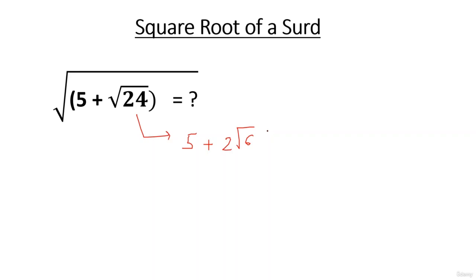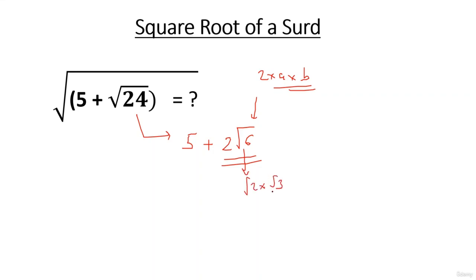Now I'll try to visualize 5 + 2√6 as a² + 2ab + b². Always remember: wherever the radical sign appears, that term will correspond to 2ab, because when you compute a² and b² the square root sign disappears. So 2√6 is the 2ab term. I need a and b such that their product gives √6 and the sum of squares gives 5. The only way is to split √6 as √2 × √3 using the property of indices.